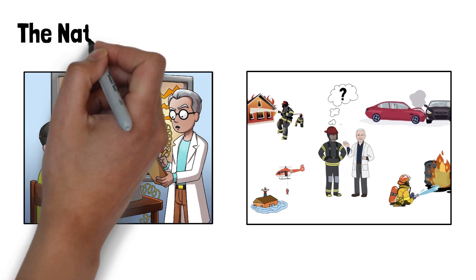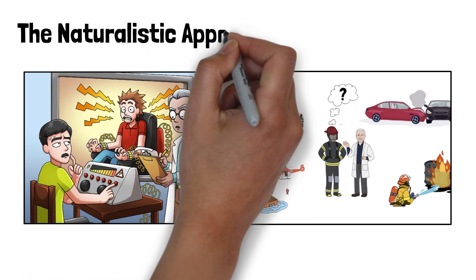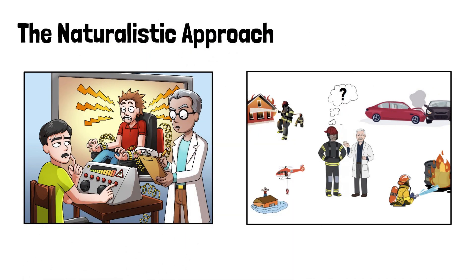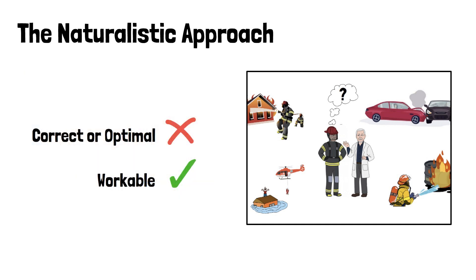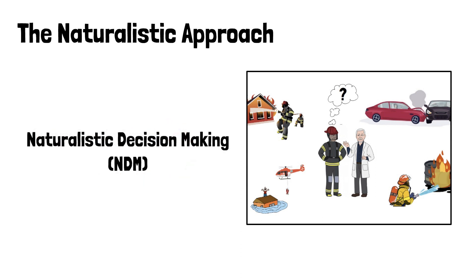One alternative is to use a naturalistic approach, responding to wicked problems with tools specifically designed to help navigate rather than solve a problem. Instead of a correct or optimal solution, a naturalistic approach looks at making steady improvements that help a community learn how to manage a problem over time. This approach began in the early 1980s, studying how people make decisions under real-world conditions.